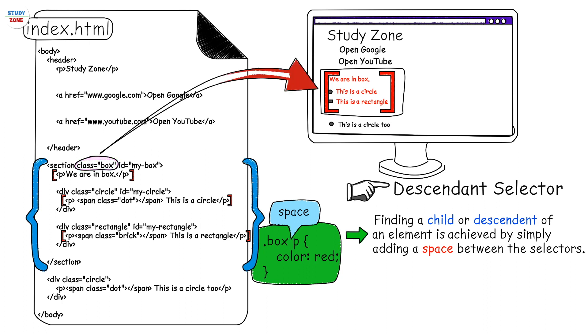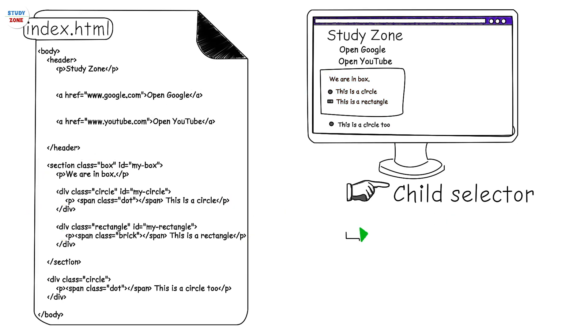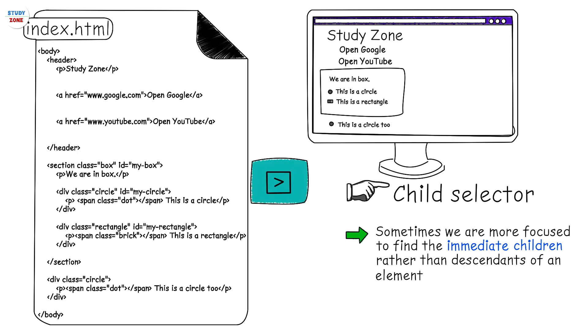The next is child selector. Sometimes we are more focused to find the immediate children rather than descendants of an element. This can be achieved by using greater than symbol. For example, .box > p { color: red; }.